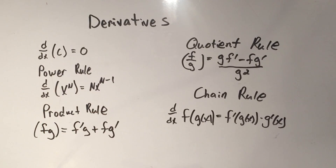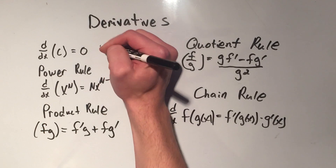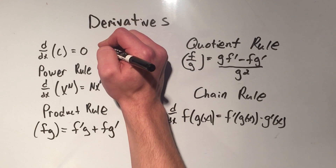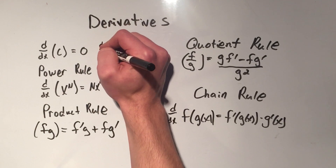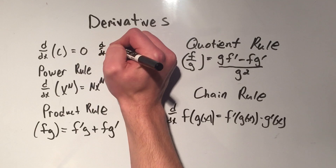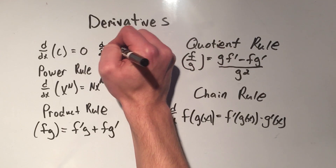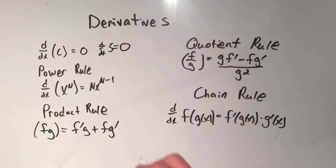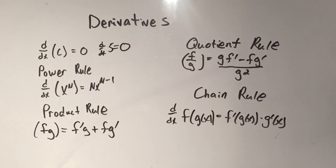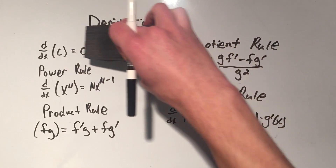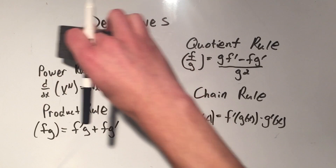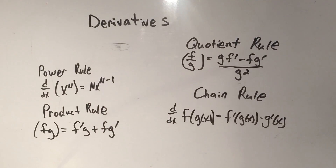The derivative of a constant is zero. So for example, if you wanted to take the derivative of five, it would be zero. Simple as that.